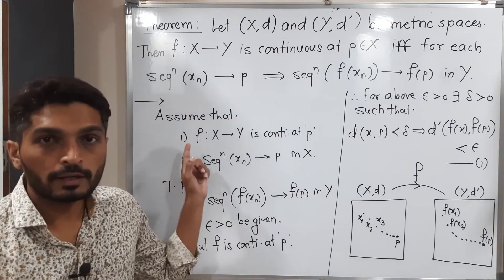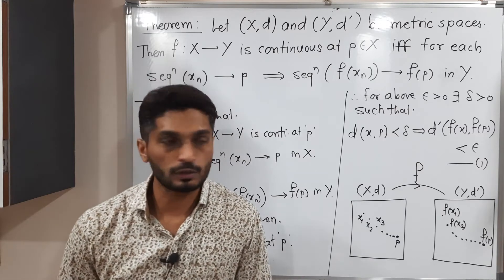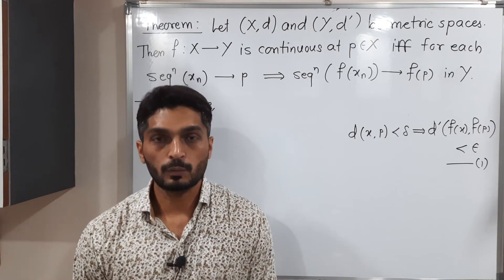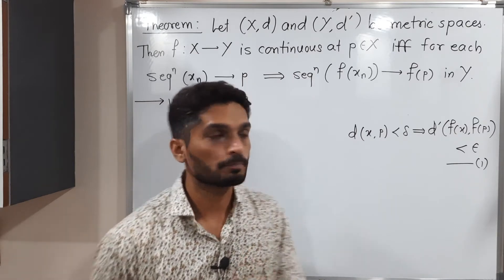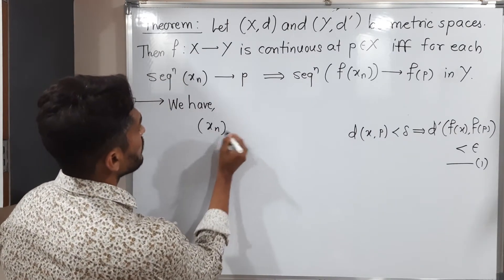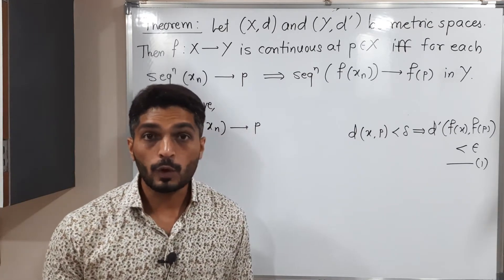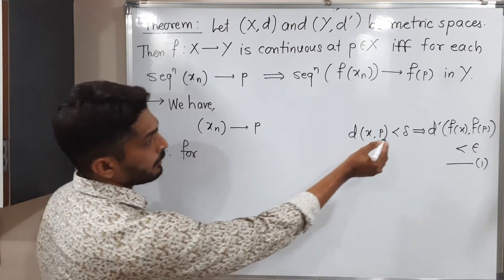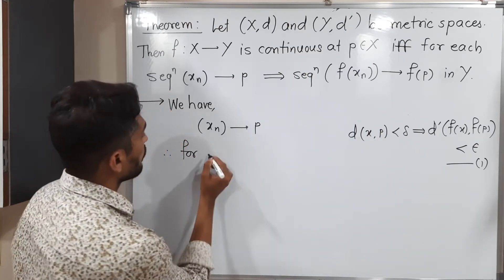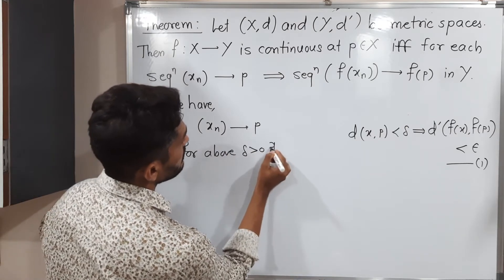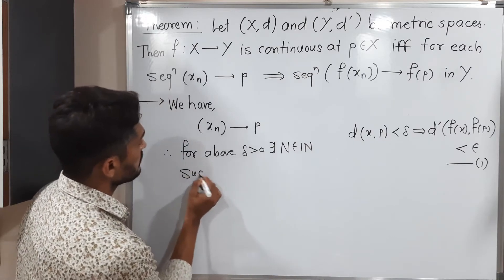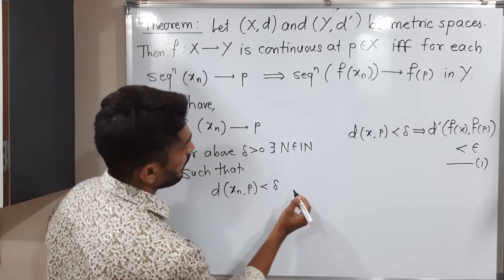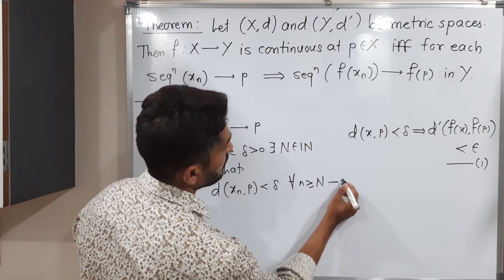We have two pieces of given information; we used the first one. Now let us use the second: since xn converges to p, by the definition of a convergent sequence, for the above delta greater than 0 there exists N belonging to the set of natural numbers such that d(xn, p) < delta for all n greater than or equal to N. Call this Statement 2.